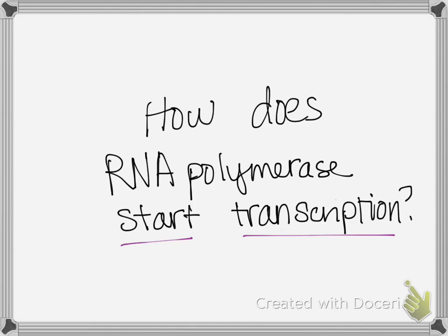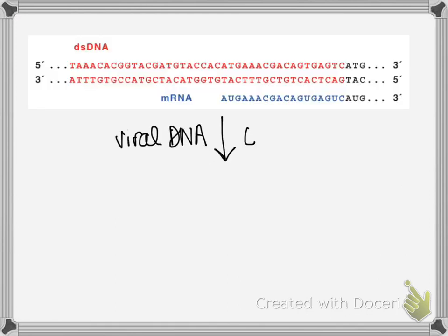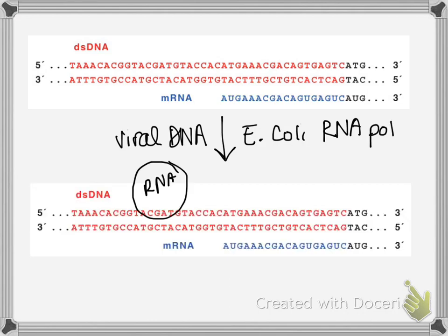There was a researcher by the name of David Pribnow, and he took advantage of the fact that there are viruses that infect bacteria called phage. He took some of this viral DNA that was really good at stealing the host central dogma machinery — or RNA polymerase — to start transcription. That meant RNA polymerase had high affinity and bound really well to start transcription on one of these segments. So he took this DNA sequence and the E. coli RNA polymerase and mixed them together, then used a technique called DNase digestion.